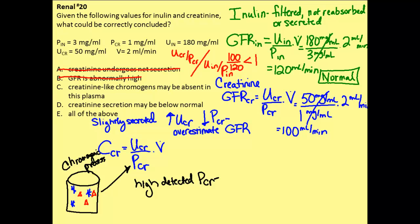This artificially elevated plasma concentration on its own would tend to underestimate the GFR. So normally you have two competing effects: slight secretion of creatinine tends to overestimate GFR by raising the urine concentration, while the chromogenic detection issue raises the measured plasma concentration and tends to underestimate GFR. In normal situations, these two processes cancel each other out, so creatinine clearance can be used as a reliable GFR indicator.